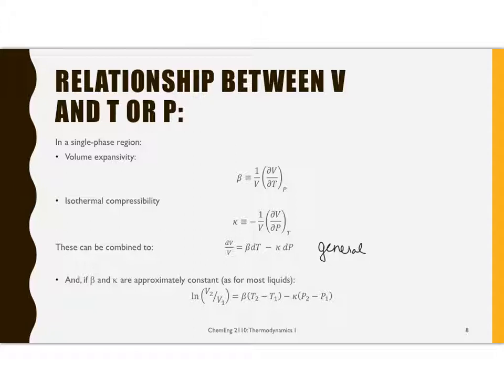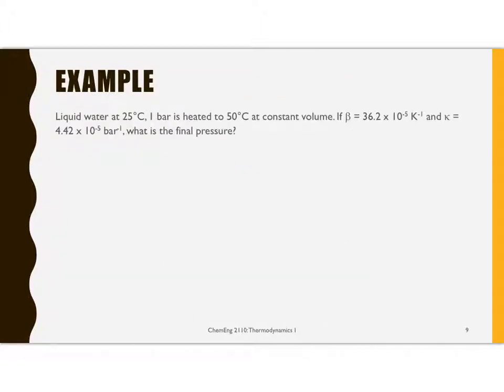So let's look at using that. In this example, we have liquid water at 25 degrees C, one bar, and we're going to heat it to 50 degrees C at constant volume. We know what beta and kappa are equal to. We have just derived this relationship that ln(V2/V1) equals beta times T2 minus T1 minus kappa times P2 minus P1.